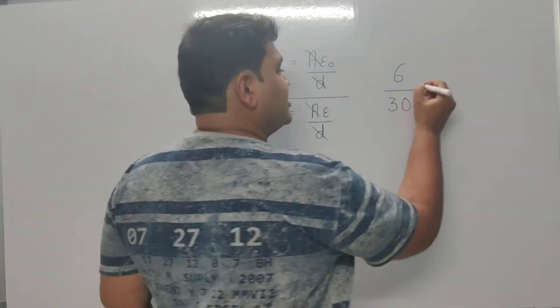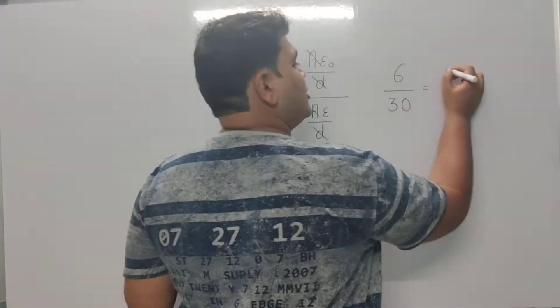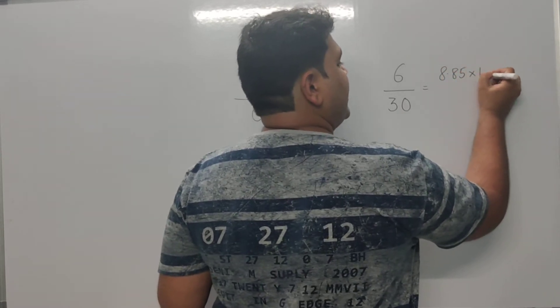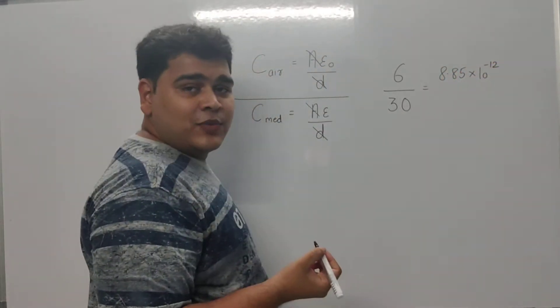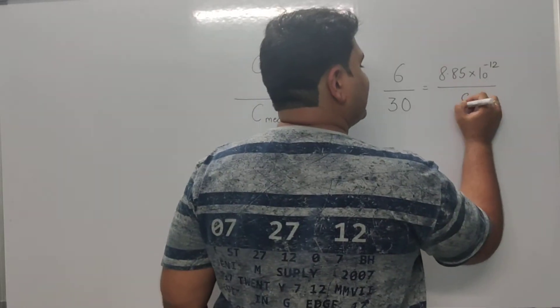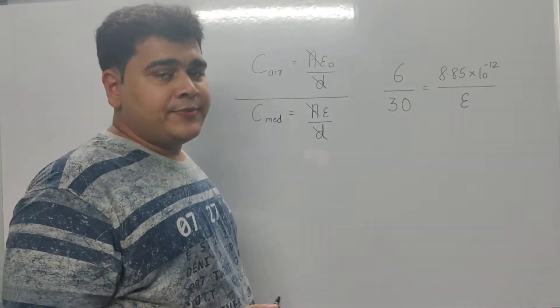We know epsilon naught value is 8.85 × 10^-12, and epsilon is what we need to find.